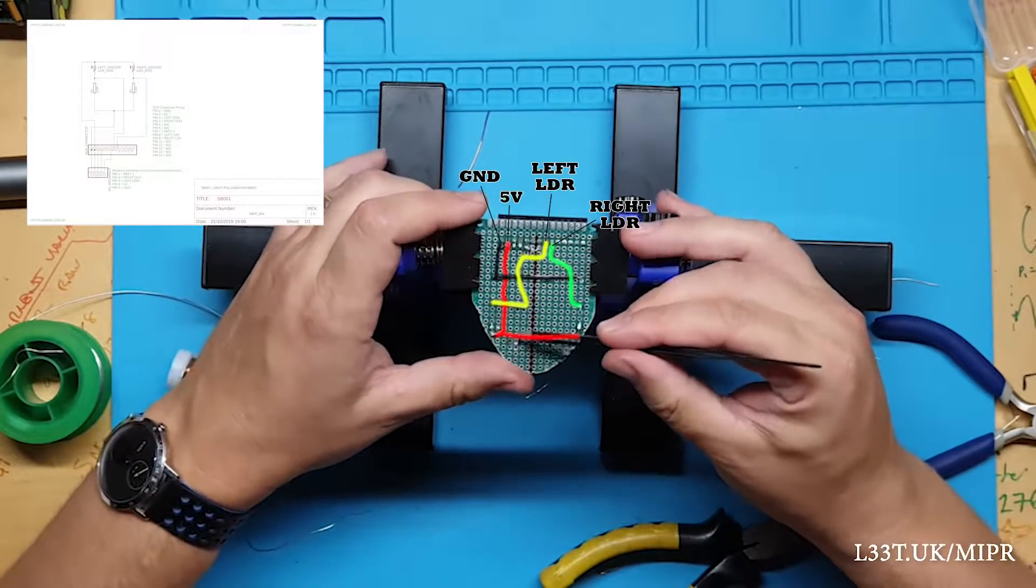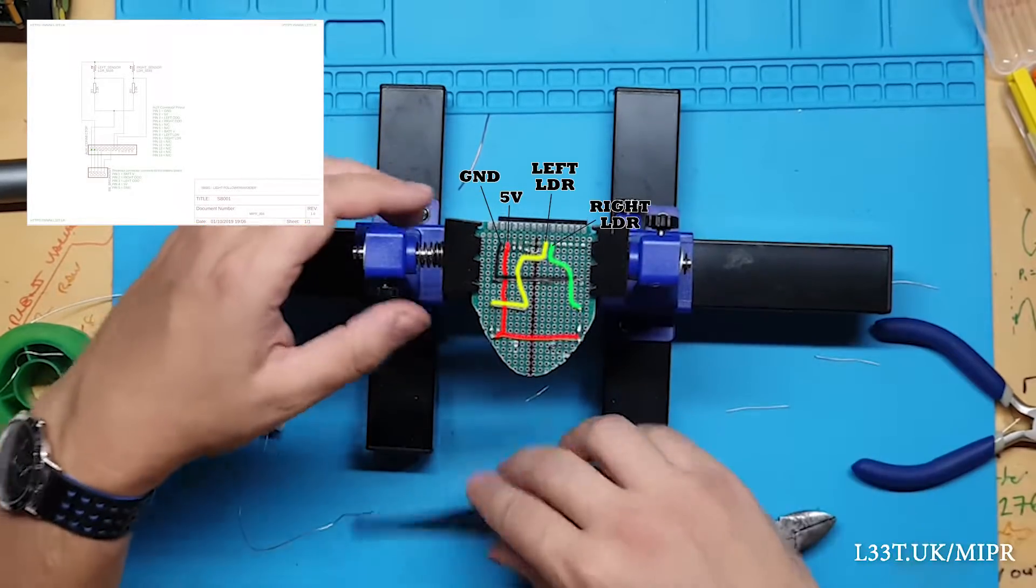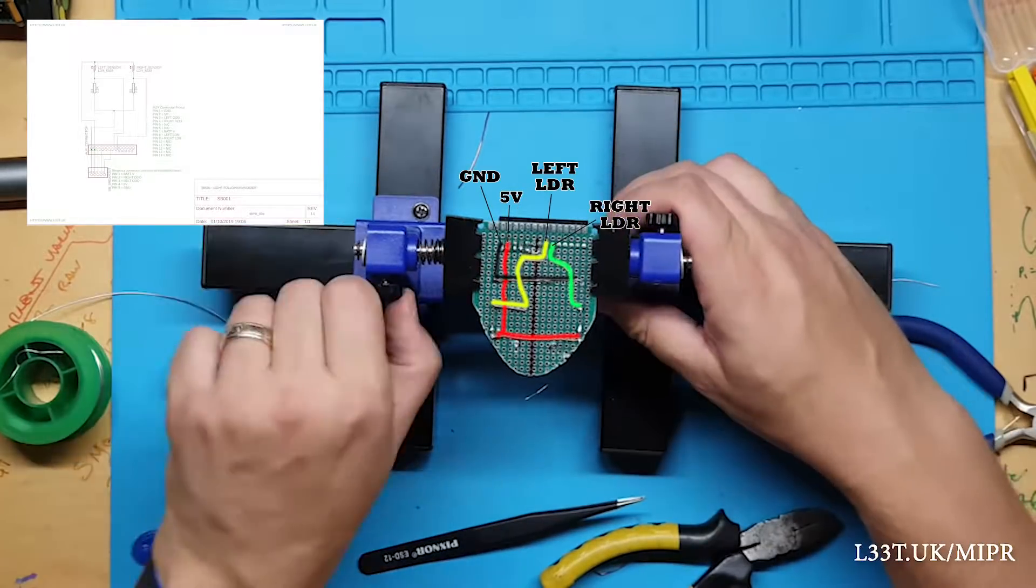This is how the pins are connected. You can see how the 5 volts and ground is connected and how the output of the voltage dividers is connected to the pins on the auxiliary connector.